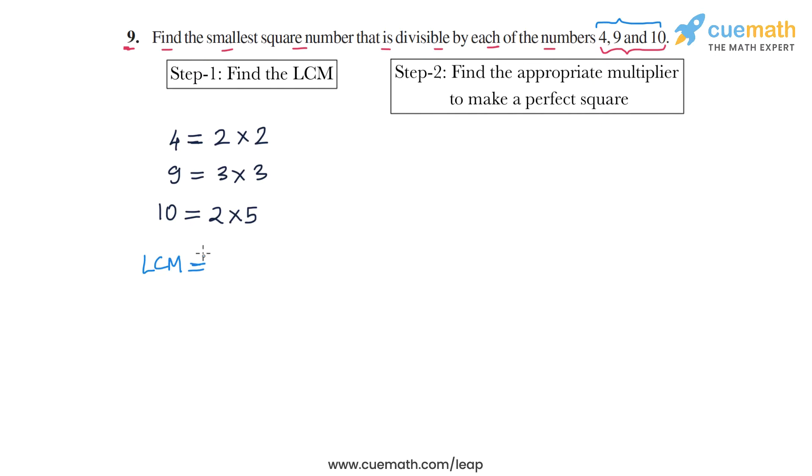From this we can write the LCM easily. The maximum number of 2s in any number is 2 in 4, so the LCM should have 2 repeated twice. Then the maximum number of 3s is also 2, so the LCM should have 3 repeated twice. And the maximum number of 5s is 1 in the number 10, so the LCM should have 1 repetition of 5.